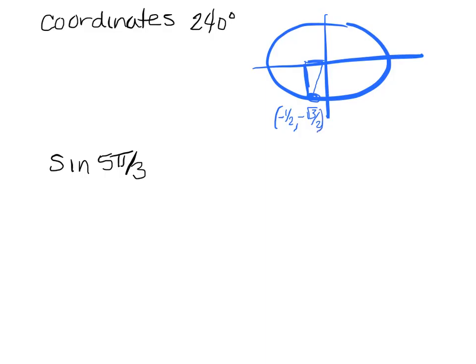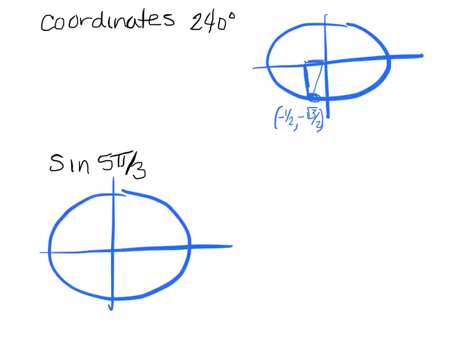We move on to the next problem where we're finding the sine of 5π over 3. First we figure out where 5π over 3 is — it would be right here. The sine is the y value, and that's going to be a long side, so we're looking at negative root 3 over 2.